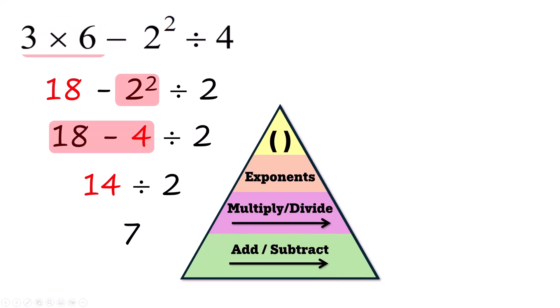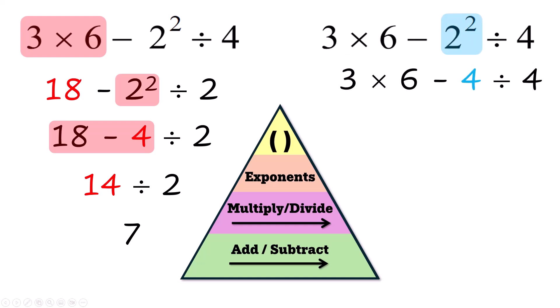Let's redo this problem using the order of operations. I don't have parentheses, but I do have exponents, so I've got to do this first. So I have 3 times 6 minus 4 divided by 4. Now I have to multiply and divide in order from left to right. As I go across, this multiplication comes up first.